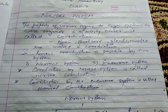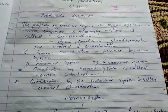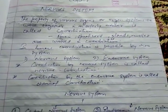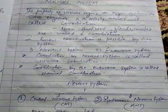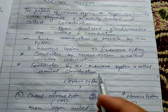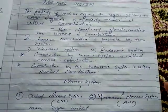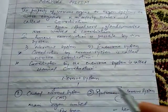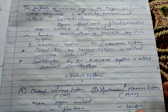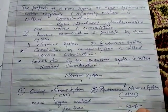The coordination brought about by the nervous system is known as nervous coordination. The coordination brought about by the endocrine system is called chemical coordination. The endocrine system is basically related to hormones, which are chemical substances secreted by different glands in the body.